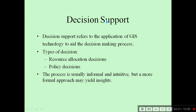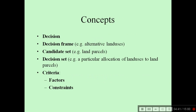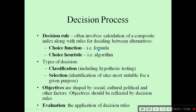Decision support refers to the application of GIS technology to aid the decision-making process. Decisions may include social allocation decisions and policy decisions. The process is usually informal and intuitive, but a more formal approach yields more insight. Key concepts include: decision framing — for example, alternative land uses; candidate set — for example, land parcels; decision set — a particular allocation of land uses to land parcels; and criteria which may be factors and constraints. The decision rule often involves calculation of a composite index along with rules for deciding between alternatives, expressed as a choice function — either a formula or a choice heuristic such as an algorithm.